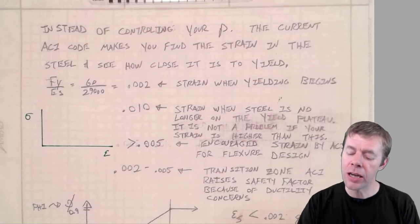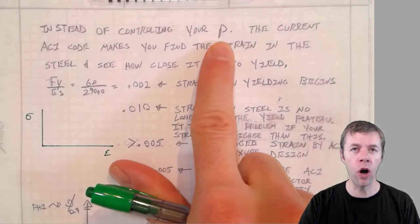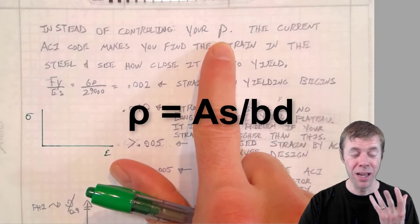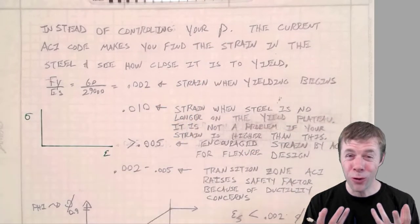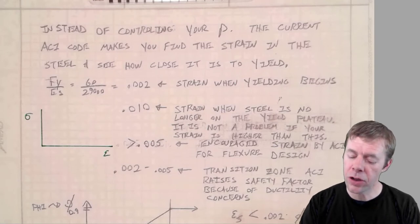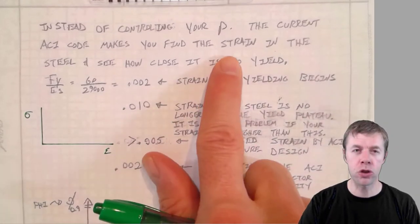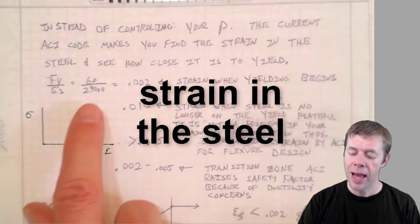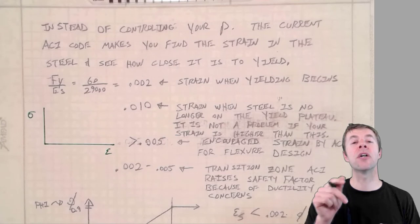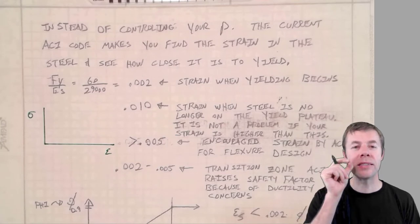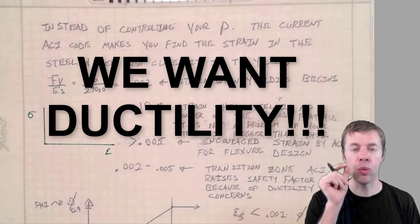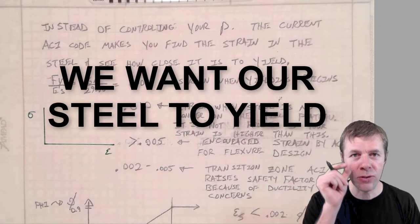We're going to talk about the fee factor today. That's one of the safety factors. In the past, ACI used to control the amount of rho, that's A_S over B times D. They still control you, they just control you in a different way. Currently, the ACI code instead looks at the amount of strain in the steel and see how close it is to yield. And this is a really good idea because we're getting closer at telling people what we want, which is ductility. We want our steel to yield.